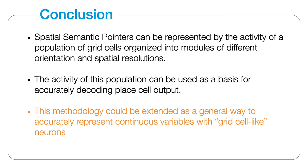To conclude, SSPs can be represented by a population of grid cells with patterns of varying scales, and place cells can be decoded from this representation. Beyond this, spatial semantic pointers represented by this grid code can be used to represent any concept that resides in a continuous feature space. Semantic pointers, discrete or continuous, that reside in different cognitive spaces can be bound together in hierarchical structures, allowing for rich and complex representations suitable for cognitive models that can be simulated with spiking neural networks.